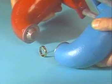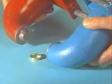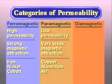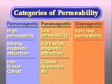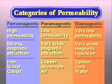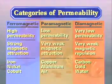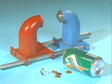Some materials very slightly repel magnetic fields. Such materials are called diamagnetic because of their very low permeability, which causes them to slightly repel flux lines. Carbon, gold, and water are diamagnetic materials. For all practical purposes, paramagnetic and diamagnetic materials are considered non-magnetic.